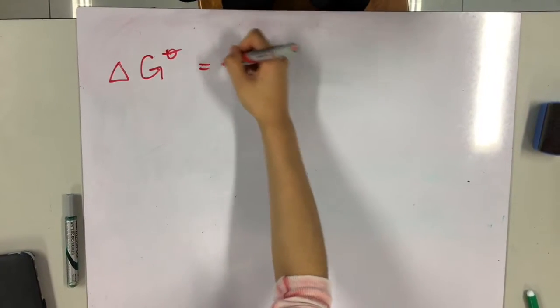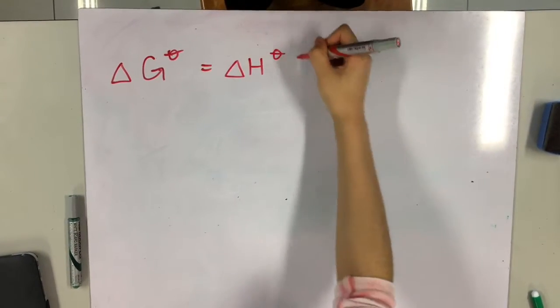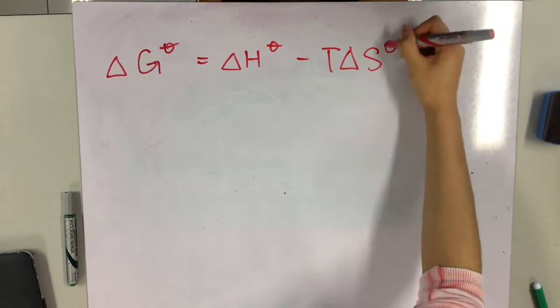Gibbs free energy equals the change in enthalpy minus temperature times the change in entropy.